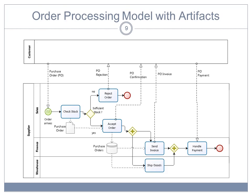And here you see again our order processing model, but this time supplemented with artifacts. So you see that the check stock task will pass on the purchase order to the accept order task as a local object. And the accept order will write into the purchase orders database. It will store the purchase order there and send invoice and ship goods can then read this purchase orders database to retrieve the information on the order that needs to be invoiced or shipped.